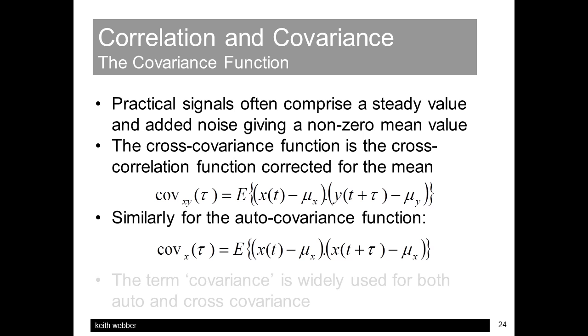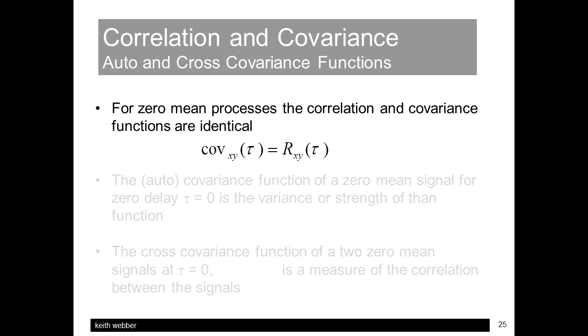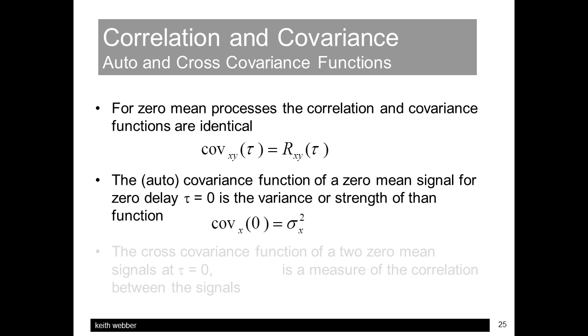For zero mean processes, the covariance function is identical to correlation function, and the term covariance is widely used for all. So it's absolutely convenient to consider zero mean processes where the covariance and correlation functions are identical. And in this case, if the autocorvariance parameter Tor is zero, the result is a signal variance, or strength.